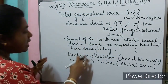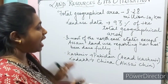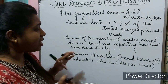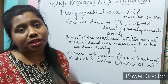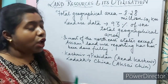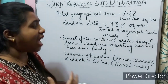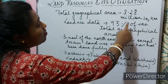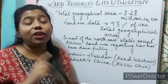China is also claiming its right over some parts of Arunachal Pradesh, claiming it belongs to South Tibet. So Kashmir and Ladakh are the areas where land use reporting has not been done fully. That is why we only have land use data for 93% of the total geographical area. Now let us have a look at the map.